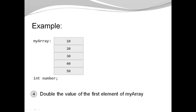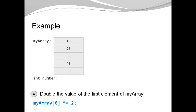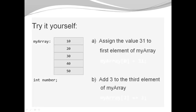Fourth challenge: double the value of the first element of myArray. In this situation, I have to read the current value of the first element, double it, and then reassign it to the same position — so I both read and modify. The reading part goes on the right-hand side, multiplied by 2, and assigned back to the same position. I can express this more concisely using a compound operator.